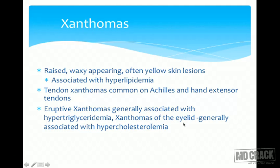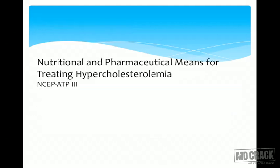Xanthomas of the eyelids, especially around the lower eyelids, are generally associated with hypercholesterolemia. So by just looking at a person, you can tell whether they have hypercholesterolemia by looking at xanthomas, especially in the lower eyelids — pale, yellow, raised waxy lesions.